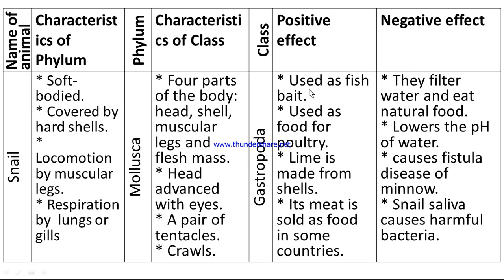Positive effects of snail: used as fish bait, used as food for poultry, lime is made from shells, and its meat is sold as food in some countries. Negative effects: they filter water and consume natural food, lower the pH of water, cause disease in minnow fish, and snail saliva can harbor harmful bacteria.